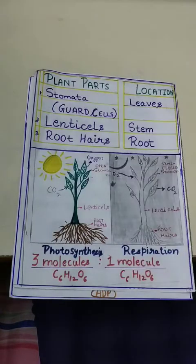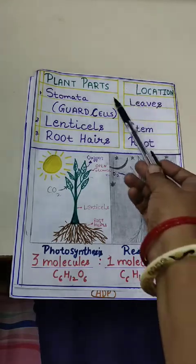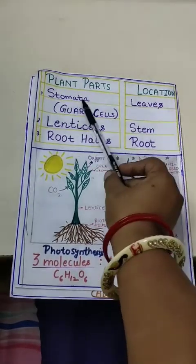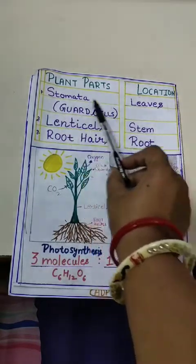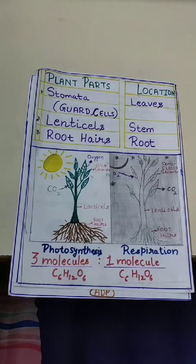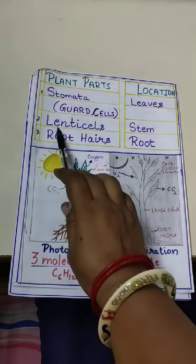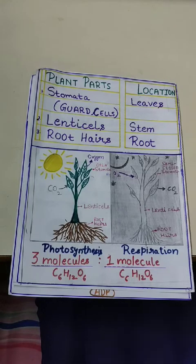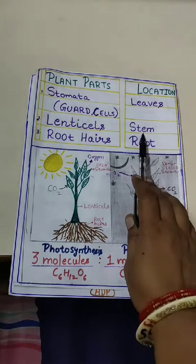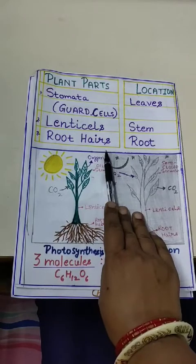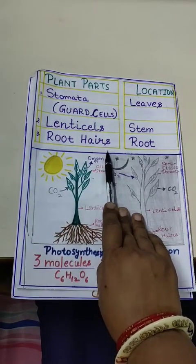Just as animals can show this mechanism of gaseous exchange, plants also show the same mechanism. In plants, there are specific structures where this can occur. In the leaves, guard cells constitute stomata, which are responsible for gaseous exchange. Similarly, the stem has openings known as lenticels, which also help in gaseous exchange. Additionally, roots carry structures known as root hairs, which help in gaseous exchange in the soil.